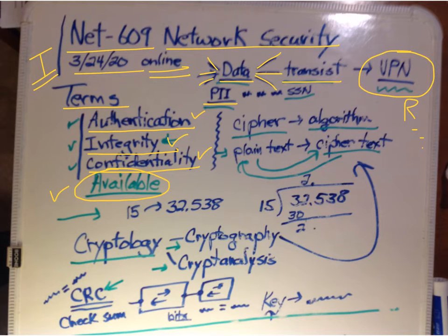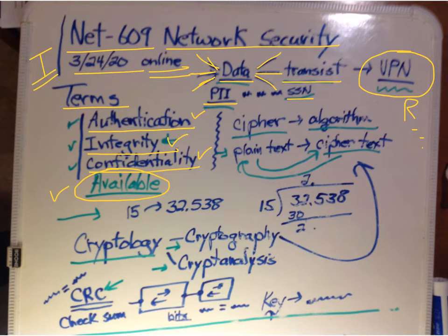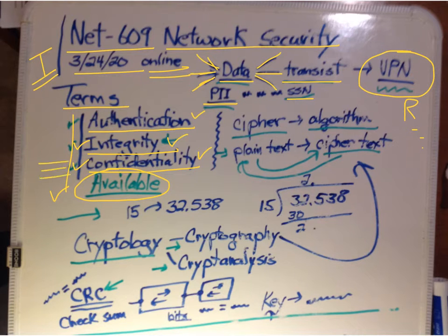We talked a little bit about that, like Social Security numbers or whatever. Data can be classified, which would determine what we need to do to protect it. Of course, we always need to protect the integrity of the data, but who can see what — there are different levels of that.